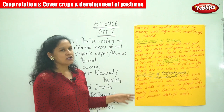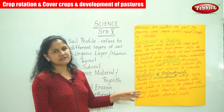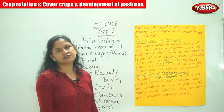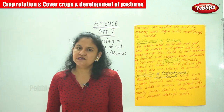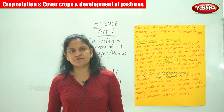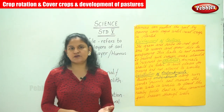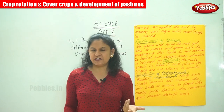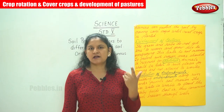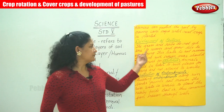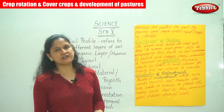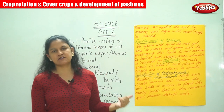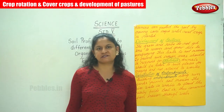These are the different methods of soil conservation: the first is increase in vegetation, crop rotation, cover crops, development of pastures, and construction of embankments.